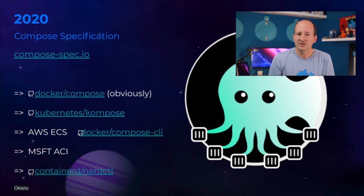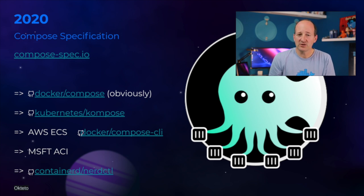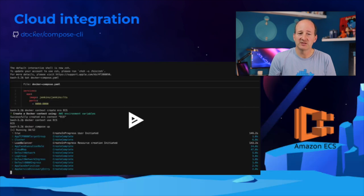More recently, Compose spec was adopted by nerdctl, a Docker-like command line that directly accesses containerd without the Docker engine. Octeto, which targets Kubernetes clusters, also joined the spec and proposed extensions for better Kubernetes concept support. At Docker, we worked on adding Compose support for Microsoft ACI and Amazon ECS, also called Cloud Integration. I was tech lead on the ECS integration.